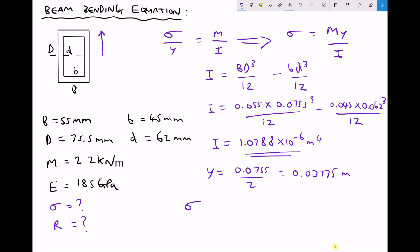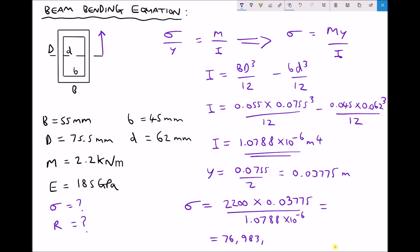Finally let's calculate the stress. Stress equals My over I. M is still 2200 Newton metres, y is still 0.03775, and I is now 1.0788 times 10 to the minus 6, giving a stress value of 76,983,686 Pascals, or 76.98 MPa. That is roughly twice the stress experienced by the solid beam, as we'd expect — there is less material but it is placed under greater stress.